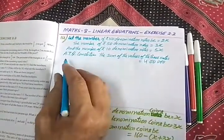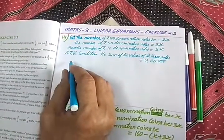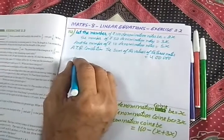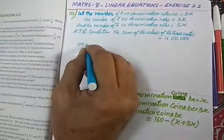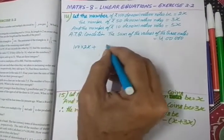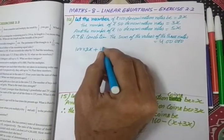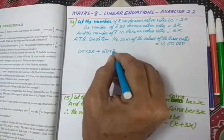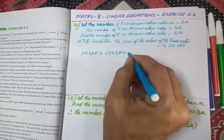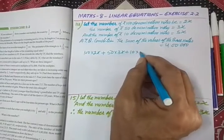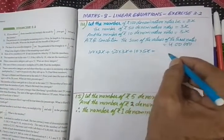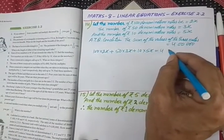So let's put them equal to 4 lakh. This is 100 into 2x, plus 50 into 3x, plus 10 into 5x. This total becomes 4 lakh.